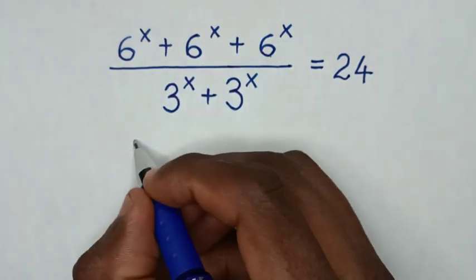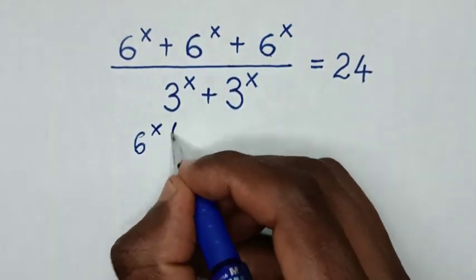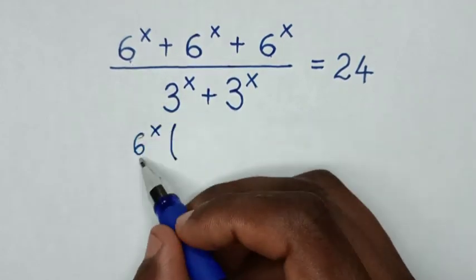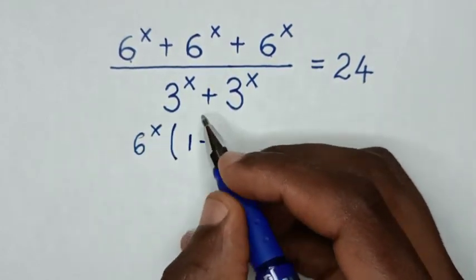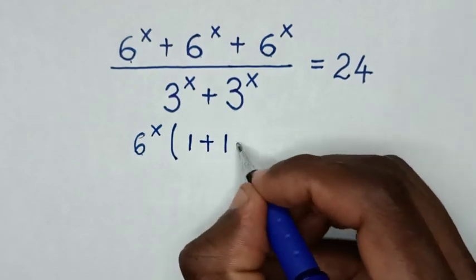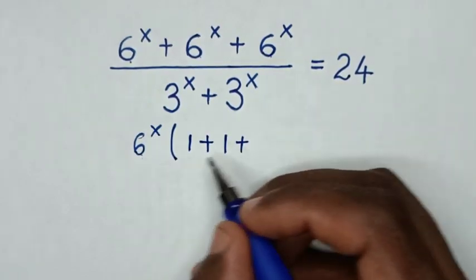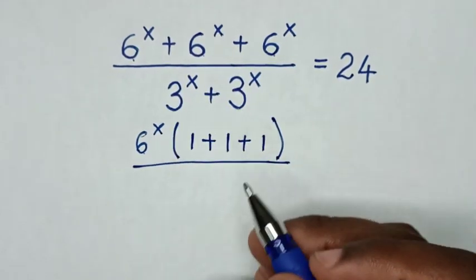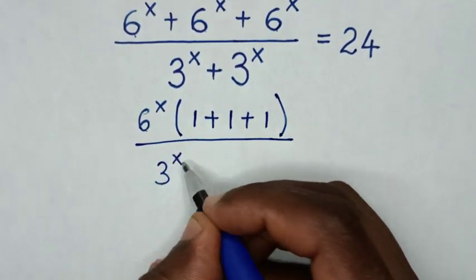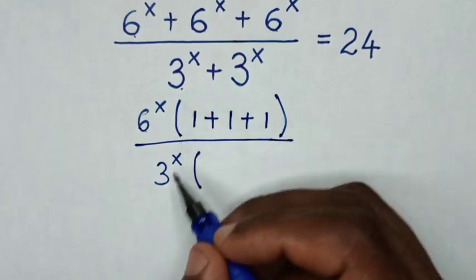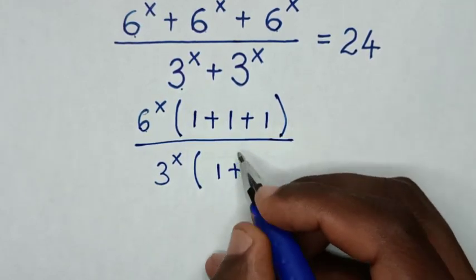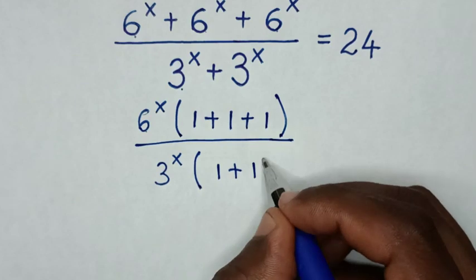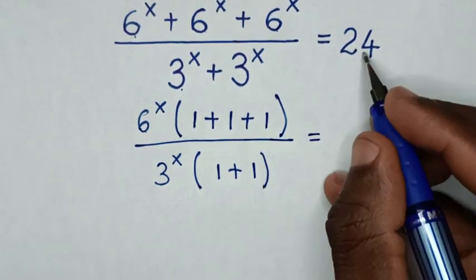6 power x is common, so we take 6^x out of the bracket. Then this divided by this is 1, plus this divided by this is 1, plus this divided by this is 1. Over in the denominator, 3 power x is common, so we take 3^x out of the bracket. This divided by this is 1 plus this divided by this is 1, is equal to 24.